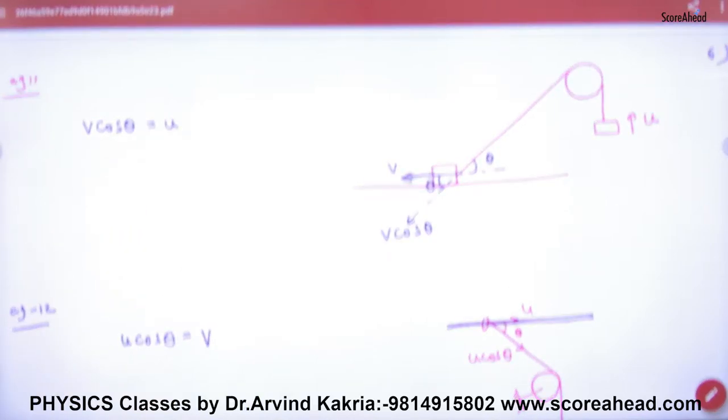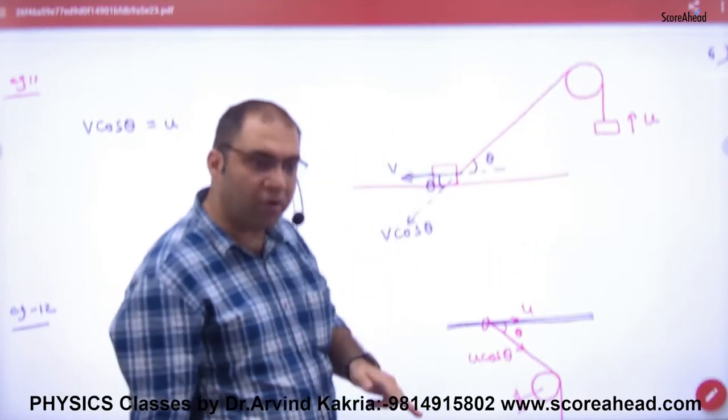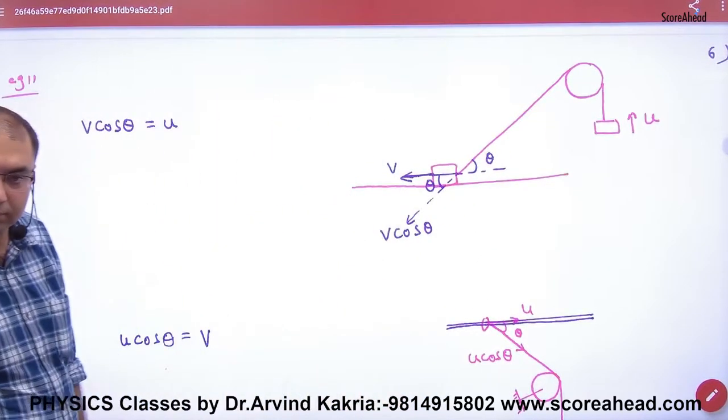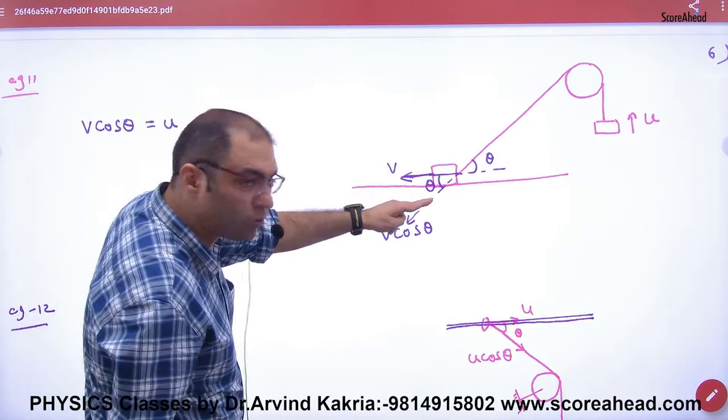Clear here? You don't have to do anything. String along is u. This string of u is v cos theta. It is equal to both. With theta, there is a component of cos, resolution of vector.